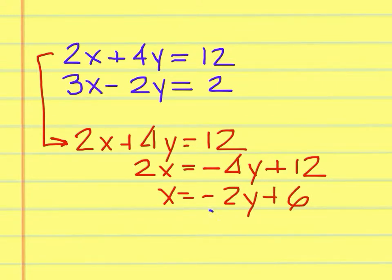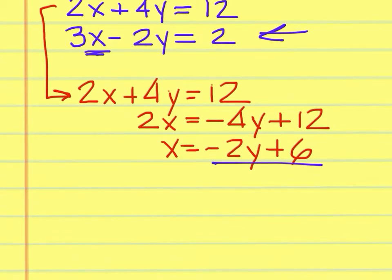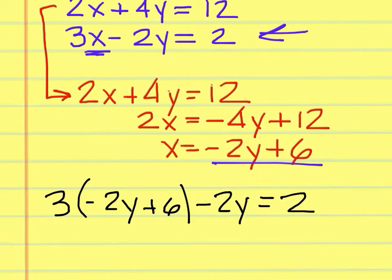I can now insert that into this equation where I see an x. So I will do that now. 3 times negative 2y plus 6 and then minus 2y equals 2.